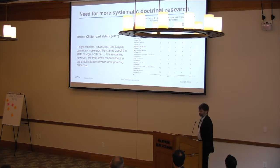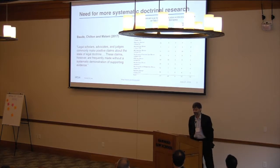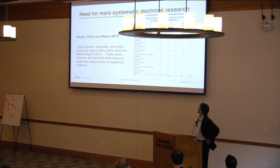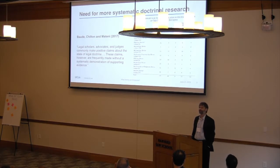A recent example is Chilton and Milani's article in 2017. They review references to doctrinal claims and the basis of support that scholars have for making those claims. Looking at one year with hand coding, the vast bulk of doctrinal claims — including the most central ones scholars are making — basically come about from string cites: throw in two or three cases, and then you demonstrate your point, at least by the norms of the field.